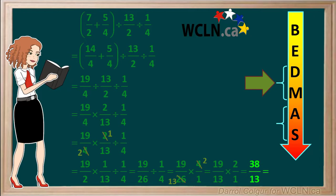13 goes into 38 2 times. 13 times 2 is 26, so the remainder is 38 minus 26, which is equal to 12 thirteenths. So the final answer to our question is 2 and 12 thirteenths.